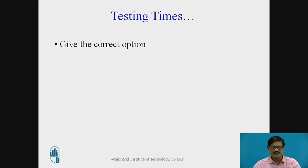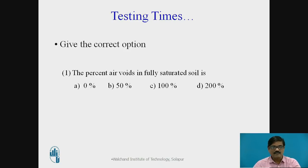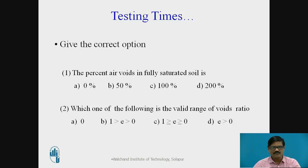I will request you to take a pause and answer these two MCQ questions, which are based on the earlier discussion. The first question is: the percent air voids in fully saturated soil is — four options are given. The second question is: which one of the following is a valid range of void ratio? Again, four options are available. Think over this, get the correct answer, and then resume the video.